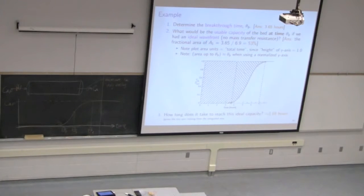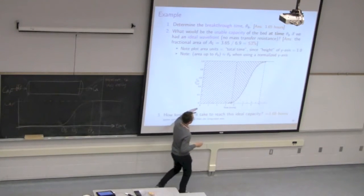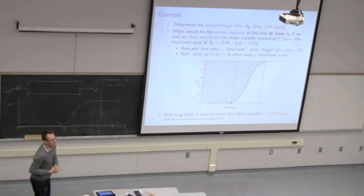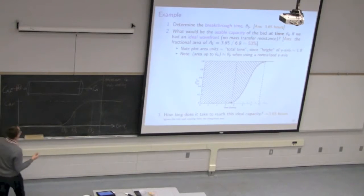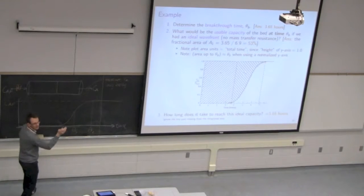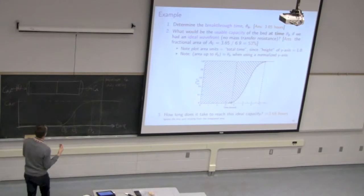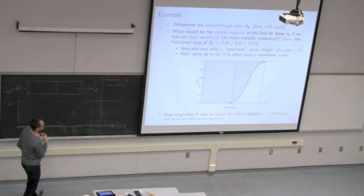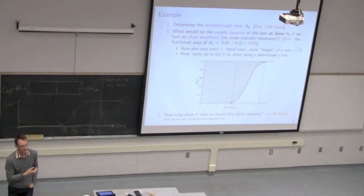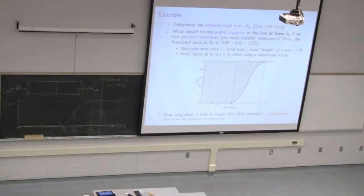If there was an ideal wavefront, it moves through vertically. If we saw that rise at 3.65 hours, you've only used 53% of the bed — that's the ratio of 3.65 divided by 6.9 hours. But we know that's not truly the case because our wavefronts don't move as a vertical line. There's this gradient — this mass transfer zone in the latter half of the bed. The question is not really a practical question; it's more to understand what an ideal wavefront is and the concept of usable capacity — simply a ratio of theta_B divided by theta_E.